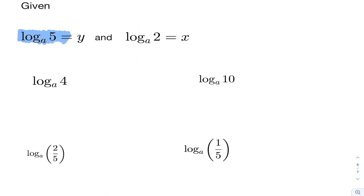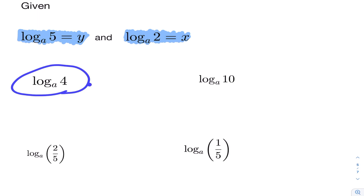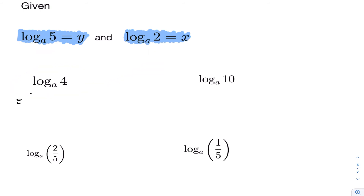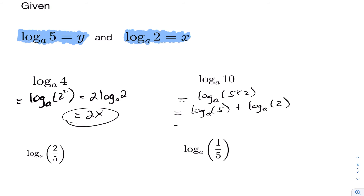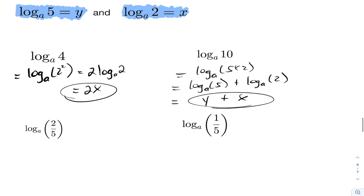For the next set of examples, we're given that log base a of five equals y and log base a of two equals x. We want to rewrite logarithms in terms of x and y. For log base a of four, we rewrite four as two squared, apply the power rule to drop down the two, and get two times log base a of two, which equals two x. For log base a of ten, we rewrite ten as five times two, apply the product rule to get log base a of five plus log base a of two, which equals y plus x.